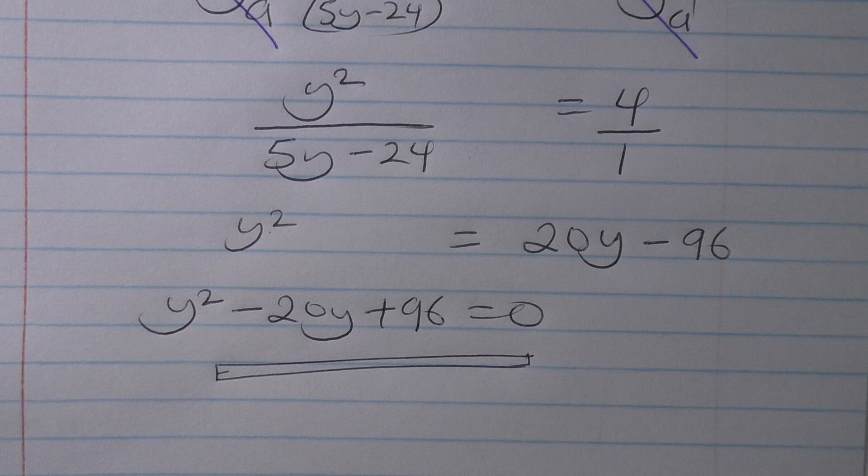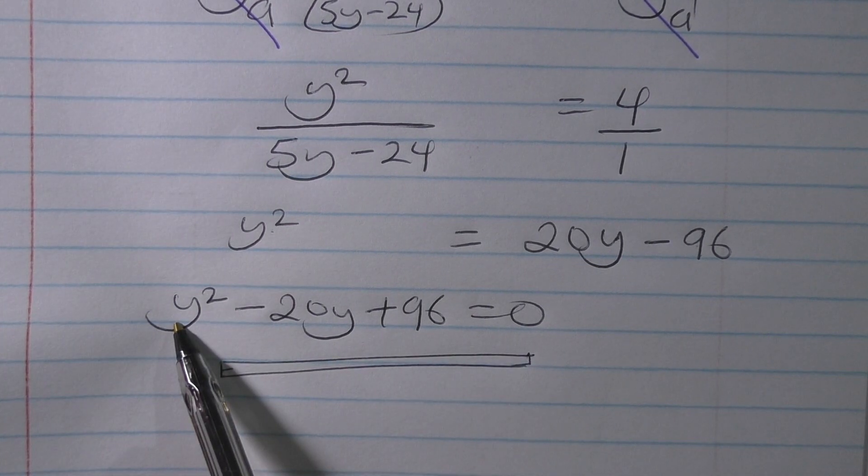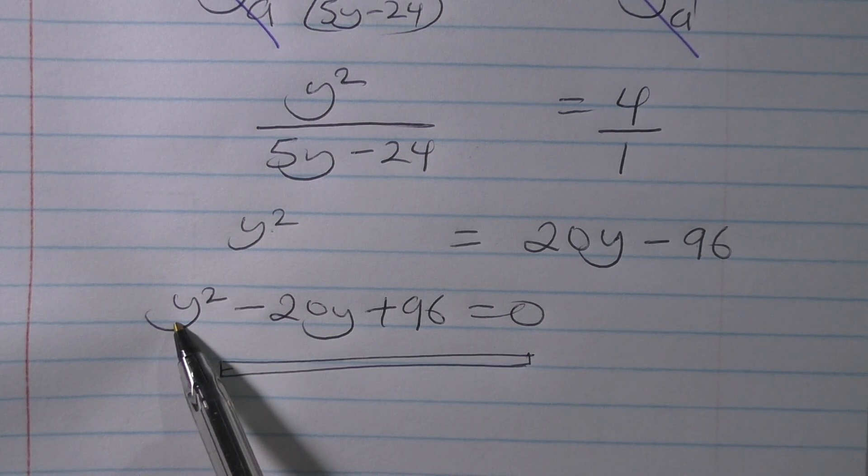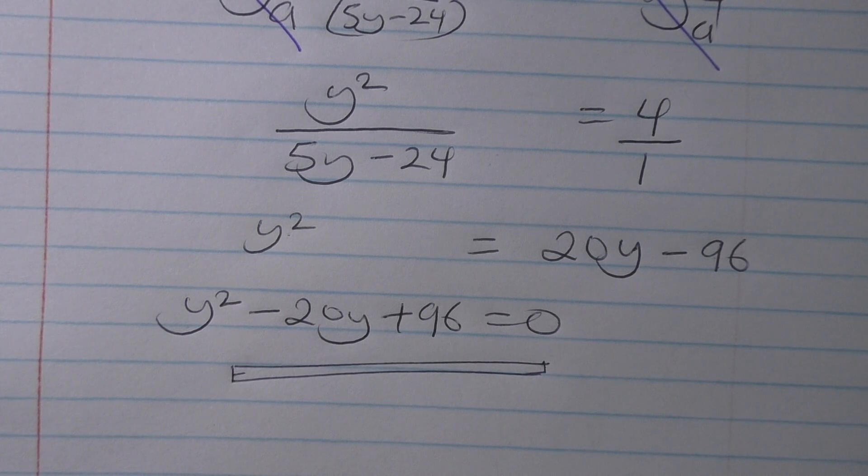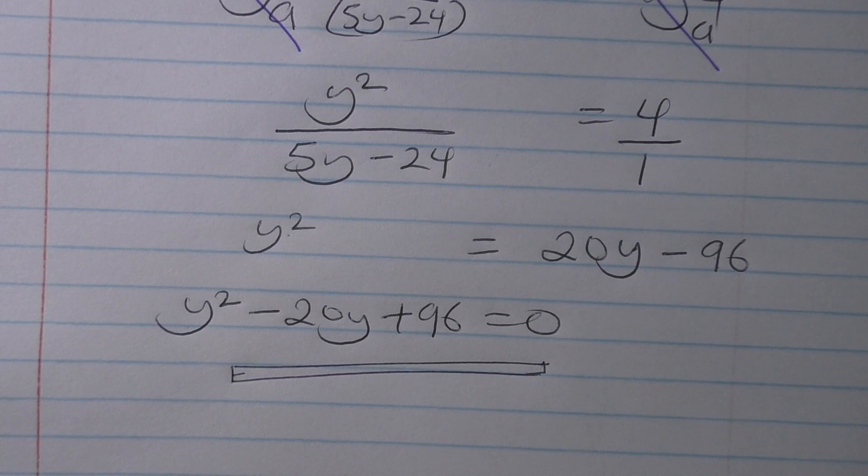Whenever you get a negative answer, you take the positive one, because we cannot have log of a negative. That is very important. So look at your answers you will get there. If y is negative, consider the positive one. The other one will be undefined.